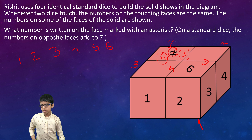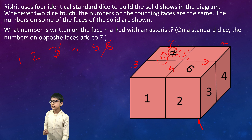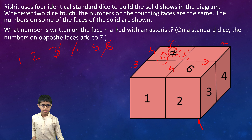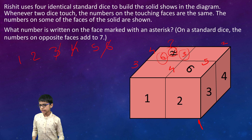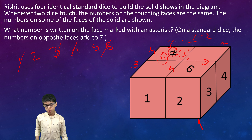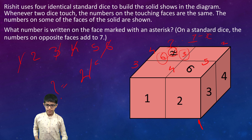Six is cancelled, and three is also cancelled. Now the opposite of three is four, so four is also cancelled. The opposite of six is one, so one is also cancelled — remember, we get the opposite by subtracting from seven. The possible value of the question mark would be either two or five.